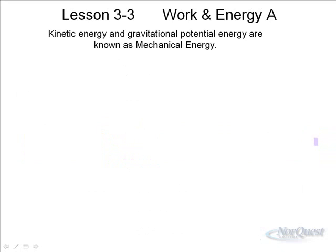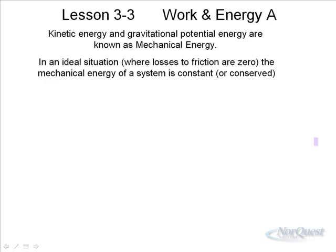Kinetic energy and gravitational potential energy are known together as mechanical energy. In an ideal situation where there is no friction, the mechanical energy of a system is constant. When you have friction, you might start off with potential energy, but as it loses it to friction, it may lose some of its mechanical energy because not all of its potential is turned into kinetic.